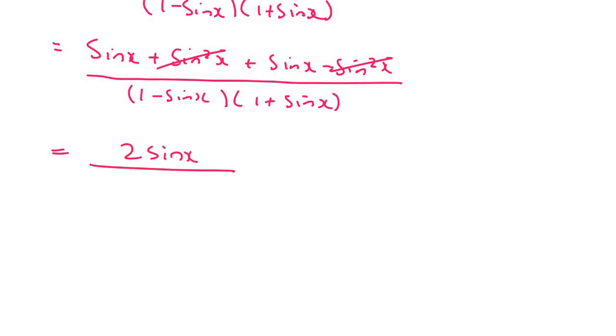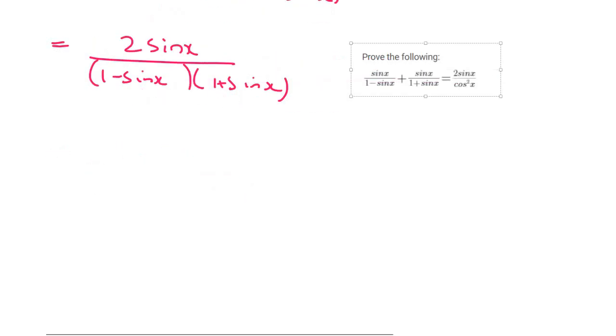At the bottom we have 1 minus sin x and 1 plus sin x. Now we have a bit of a problem because, well not a problem but we need to identify something. At the top everything's good, 2 sin x. But at the bottom there's a cos. So we can't just leave it in the brackets.